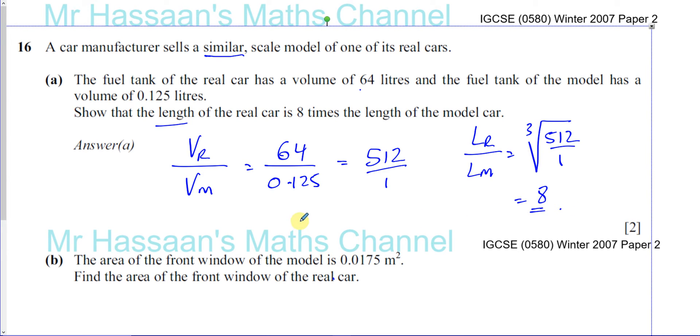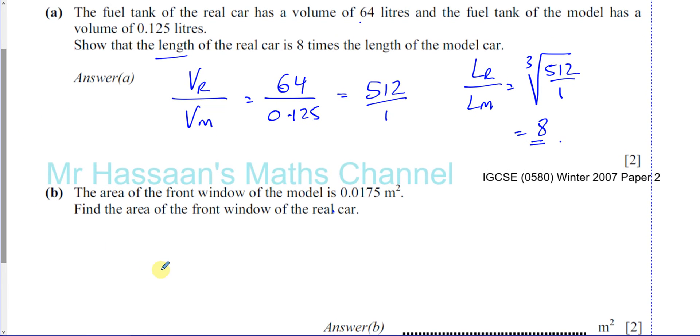So for similar objects, the ratio of the areas is the square of the ratio of the lengths. The ratio of the volumes is the cube of the ratio of the lengths. So if you want to find the ratio of the lengths and you have the ratio of the volumes, you find its cube root. Part b, the area of the front window of the model is 0.0175 meter squared. Find the area of the front window of the real car.